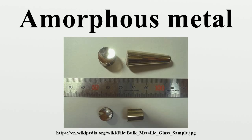In 1992, the commercial amorphous alloy Vitri-Loy I was developed at Caltech as part of Department of Energy and NASA research into new aerospace materials. More variants followed.